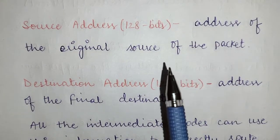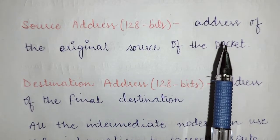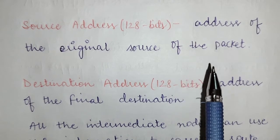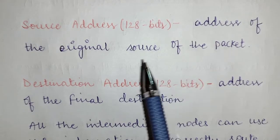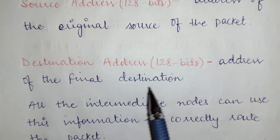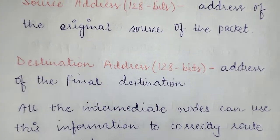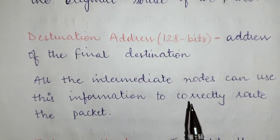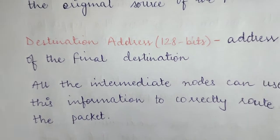The source address field is 128 bits and contains the address of the original source of the packet — the source that initiated the transmission. The destination address is also 128 bits and indicates the final destination for which the packet is transmitted. All intermediate nodes use this information to correctly route the packet, passing it on to the appropriate outgoing line until it reaches the final destination.